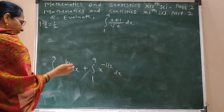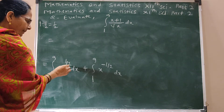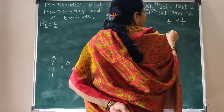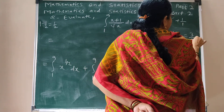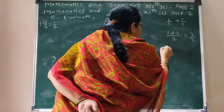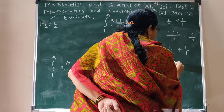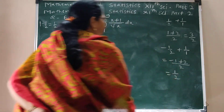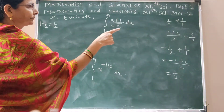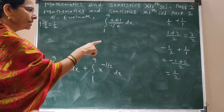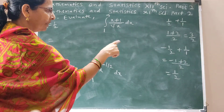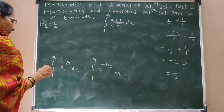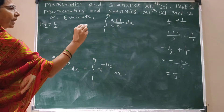The integration of this term uses the power rule: n plus 1. So half plus 1 equals 1 plus 2 by 2, that is 3 by 2. Similarly, minus half plus 1: cross product gives minus 1 plus 2, which is 1 by 2. So integration of x raised to half is x raised to 3 by 2.